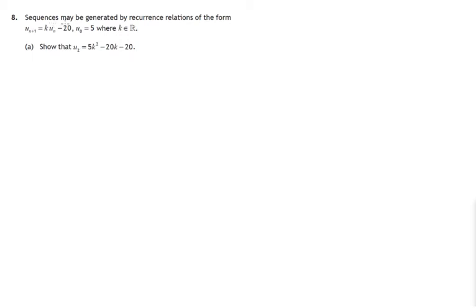Here we're told that sequences are generated by this recurrence relation. We're also told that u_0 equals 5. We're asked to show that u_2 is equal to this expression.